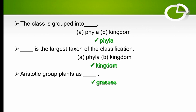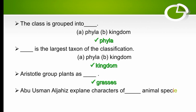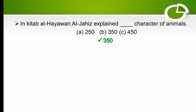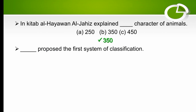Aristotle explained the characters of 350 animal species. The right option is 350 — he explained 350 characters of animals.